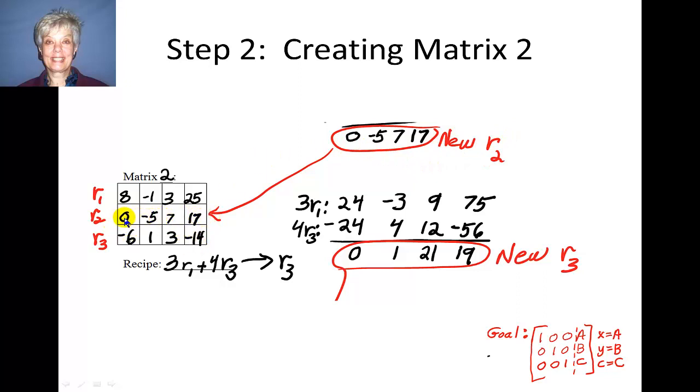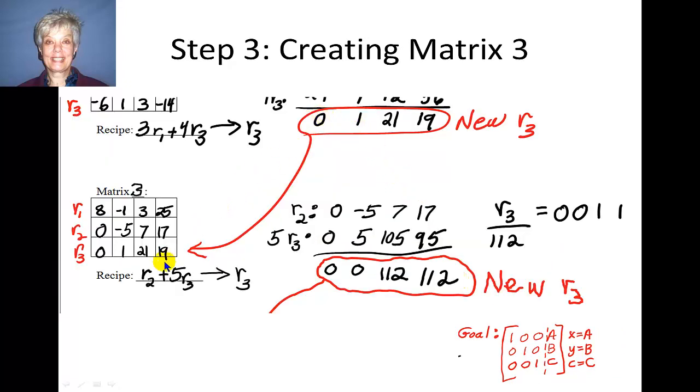I place it in row 2 right here. And now my goal is to change this position, the negative 6 in row 3, into a 0. I will do this by adding 3 times row 1 to 4 times row 3, and then substitute the result into row 3. So here I go. 3 times row 1 will give me 24, negative 3, 9, and 75. And 4 times row 3 will give me negative 24, 4, 12, and negative 56. And when I add these 2 together, I get 0, 1, 21, and 19. And this is going to be my new row 3, which I substitute in row 3. So now I have two 0's. One in the first position in row 2, and one in the first position in row 3.